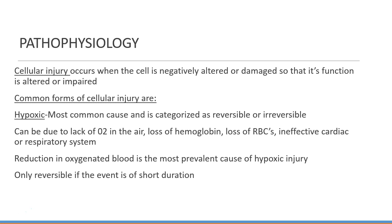Cellular injury occurs when the cell is under assault and is negatively altered, damaged to the point that normal function suffers, or permanently impaired. The most common causes of cellular injury include hypoxic, chemical, infectious, immunologic and inflammatory, genetic, nutritional imbalances, and physical agents. Hypoxic injury is the most common and most studied form of cellular injury, and can be categorized as irreversible or reversible. It can be caused by reduced oxygen in the air, loss or non-functional hemoglobin, decreased number of blood cells, or a problem with the respiratory or cardiac system.